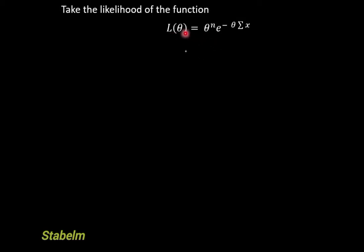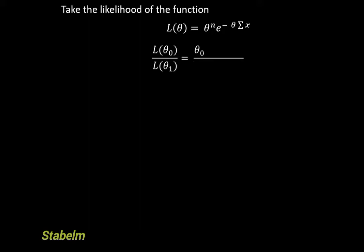Now, since we have L(θ), substituting into the formula, wherever we have theta-naught we substitute theta-naught, and wherever we have theta-1 we substitute theta-1. This gives us: L(θ₀)/L(θ₁) = [θ₀^N · e^(−θ₀ΣX)] / [θ₁^N · e^(−θ₁ΣX)] ≤ K. We have substituted the likelihood into the most powerful test formula.